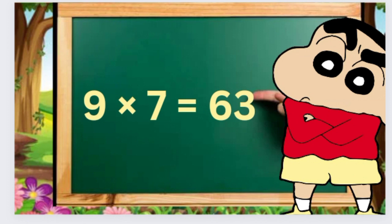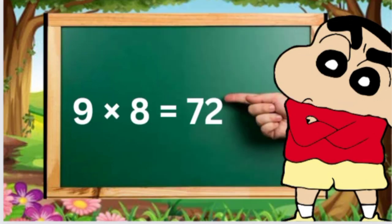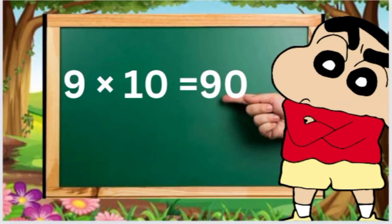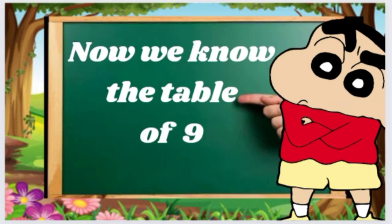Nine sevens are sixty-three, nine eights are seventy-two, nine nines are eighty-one, nine tens are ninety. Now we know the table of nine.